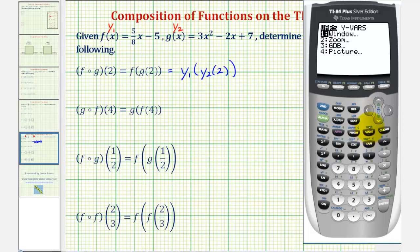So we're going to press vars, right arrow, enter. Notice how y sub one is already highlighted, so we'll press enter. Open parenthesis. Now we want to select y sub two, so we'll press vars, right arrow, enter. Go down to number two, press enter. Another open parenthesis. The input of two. And now we have two closed parenthesis. And now we can just press enter.